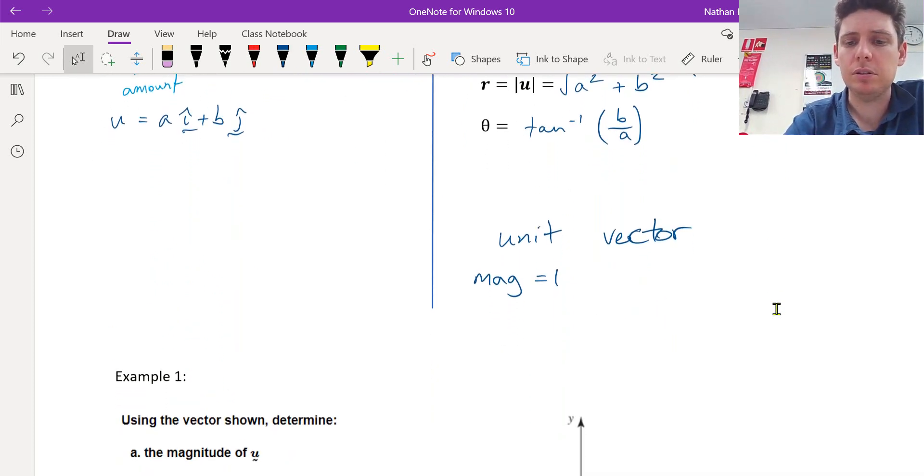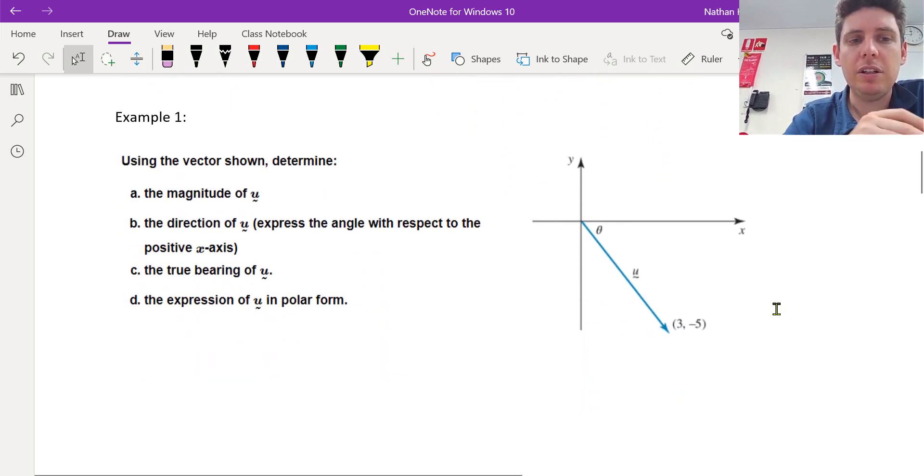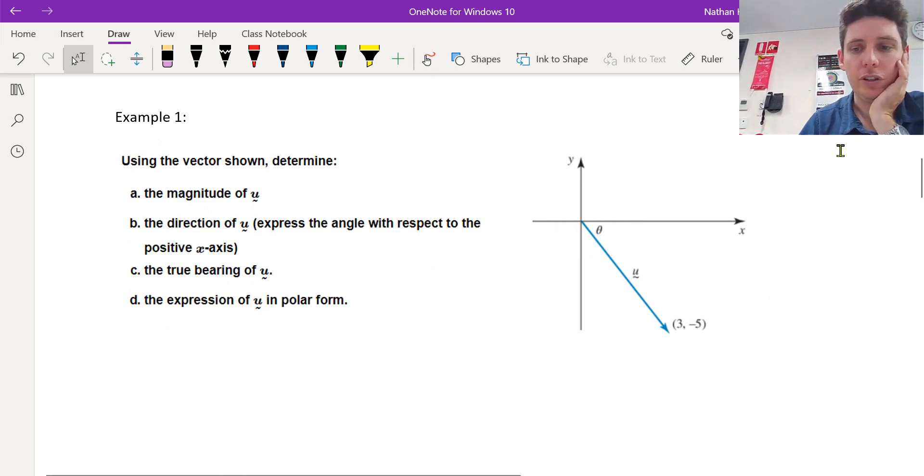Let's do an example. So we've been given a vector. It wants us to determine the magnitude of u. So it shows us where the vector finishes, 3 for the x value, negative 5 for the y value. It wants the magnitude.